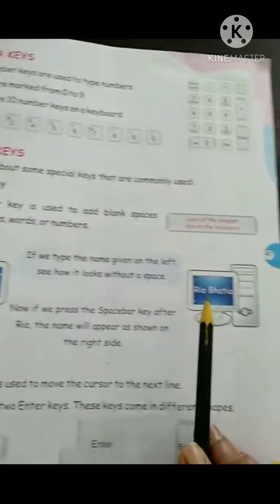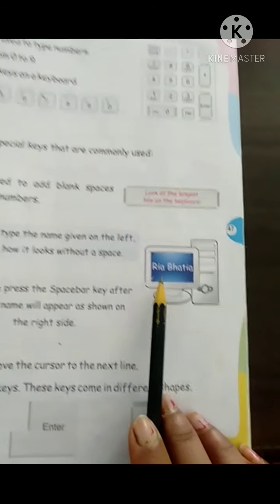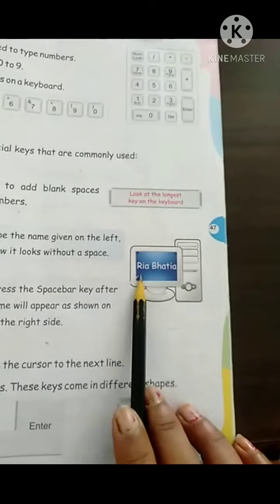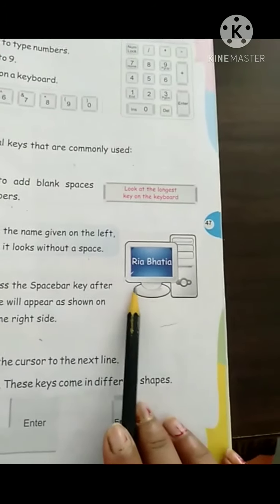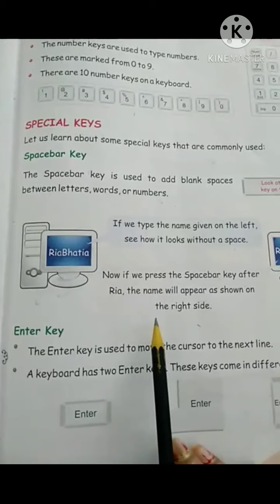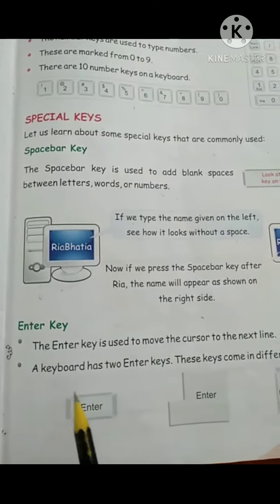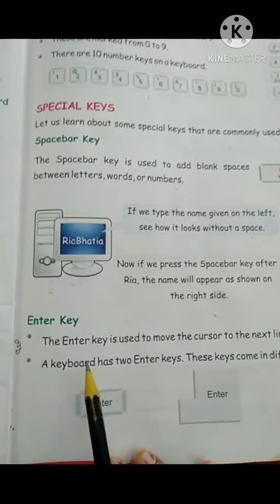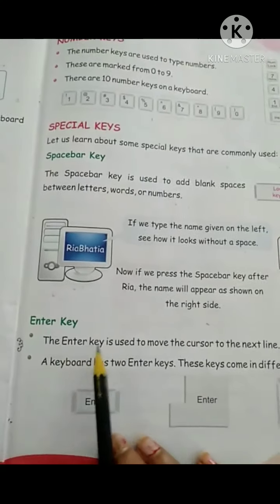After giving space, 'Rhea Bhatia' looks proper. So the space bar is an important key for typing letters and numbers. The next key is the enter key. The enter key is used to move the cursor to the next line.